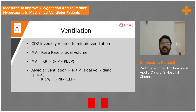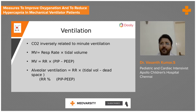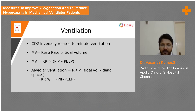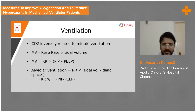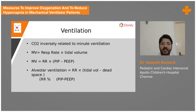We typically keep a tidal volume of 6 to 8 ml per kg. This tidal volume is determined by the PIP you set. With PEEP already at baseline, you set a PIP — say 10 — and check the tidal volume. If it's only 3 ml/kg, increase PIP to 12, then 14, titrating until you achieve 5 to 8 ml/kg, and then leave it at that level. Then check CO2 and adjust accordingly.